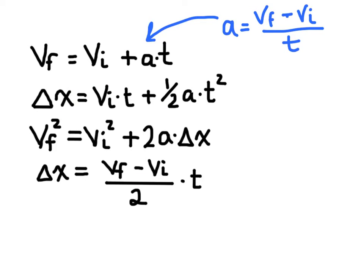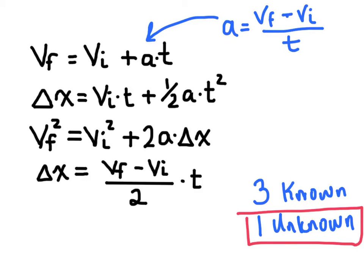Same thing as we keep on going down. And so the trick here when we're solving problems is to identify which of these equations is going to be best suited for the problem you're trying to solve. Now generally, when you're solving a kinematics problem, you're going to have three known variables and then one unknown variable. And so since each of these equations has four variables, all you have to do is basically pick the equation that fits this unknown variable.